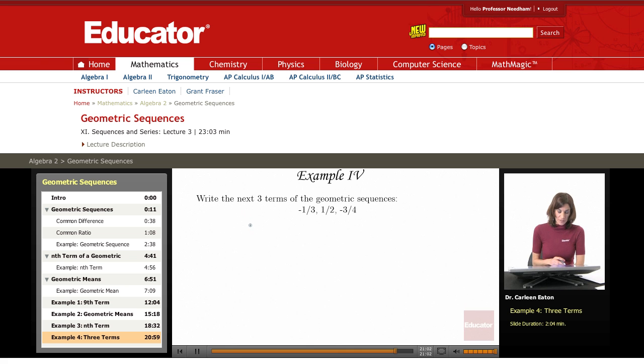The next three terms of the geometric sequence: negative one-third, one-half, negative three-fourths.